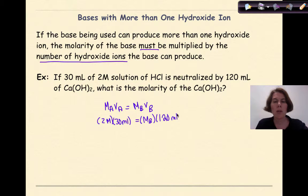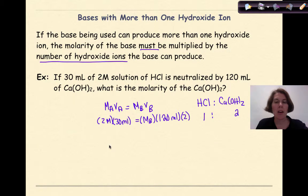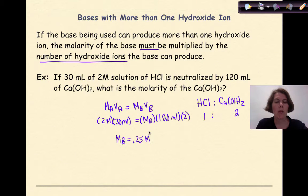We're solving for MB, and the volume of the base is 120 milliliters. Looking at the ratio: HCl provides 1 hydrogen ion, while Ca(OH)₂ provides 2 hydroxide ions — a one to two ratio. So we multiply the base side by 2: MA times VA equals 2 times MB times VB. That gives 2 times 30 equals 2 times MB times 120. Solving for MB, the answer is 0.25 molar.